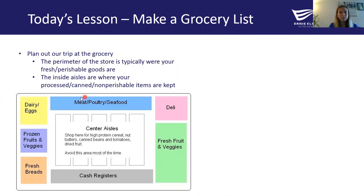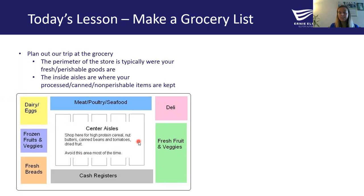The outside is where all of your fresh produce, meats, dairy, and breads will be. It might not be this exact layout, but typically the outside or the perimeter of the grocery store is where you want to do most of your shopping. The inside aisles are where your canned foods, non-perishable items, and processed foods are going to be. Sometimes you'll need some ingredients from the center, and that's okay, but most of the time try to get your items from the perimeter.